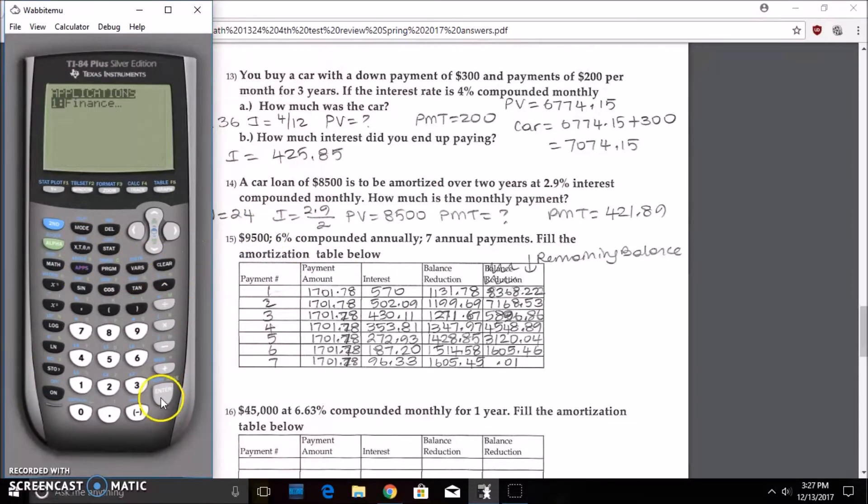So first I'm going to have to go into TVM Solver. We see that 9500 at 6% compounded annually, right? 7 annual payments. Fill the amortization table below. And we already have the answer and everything.